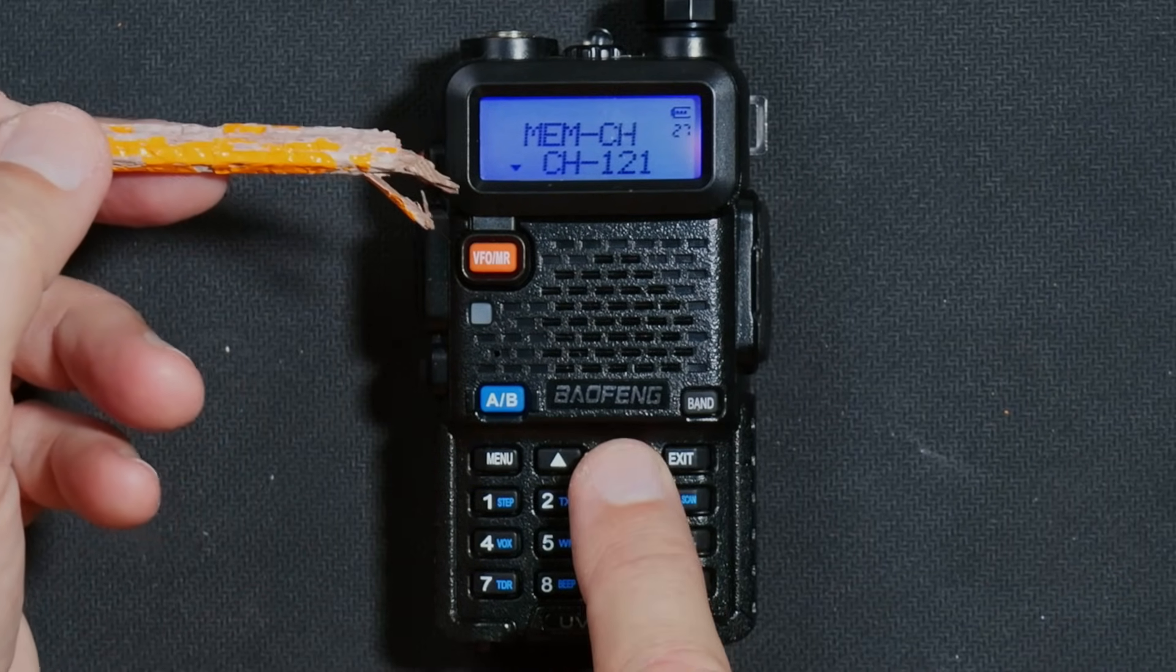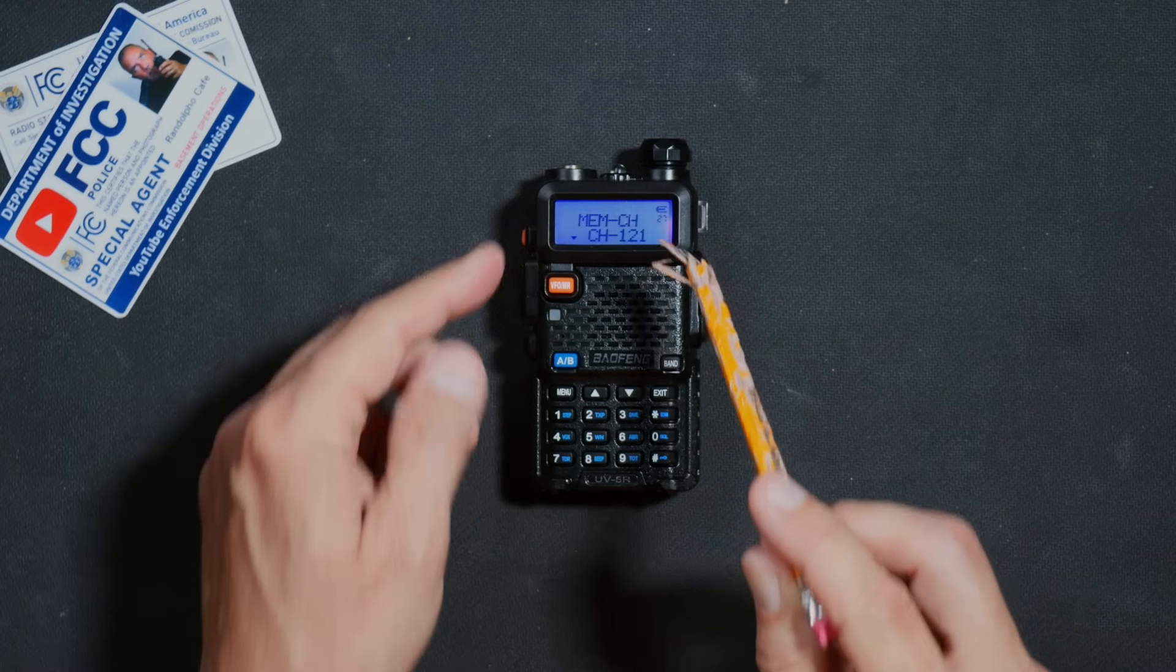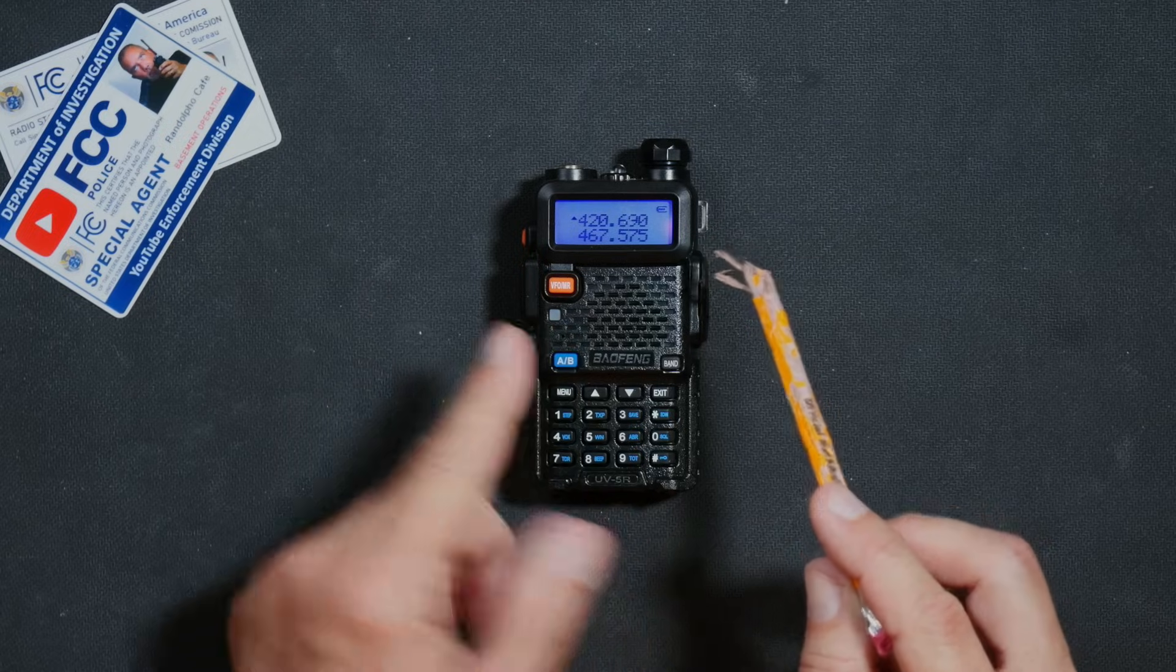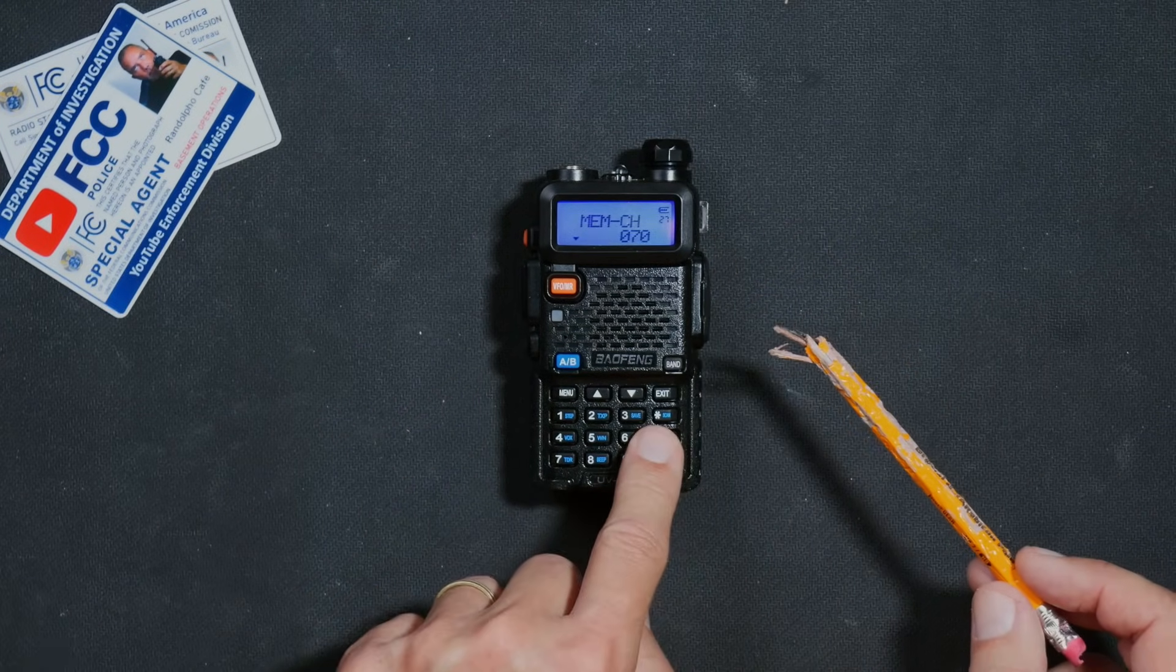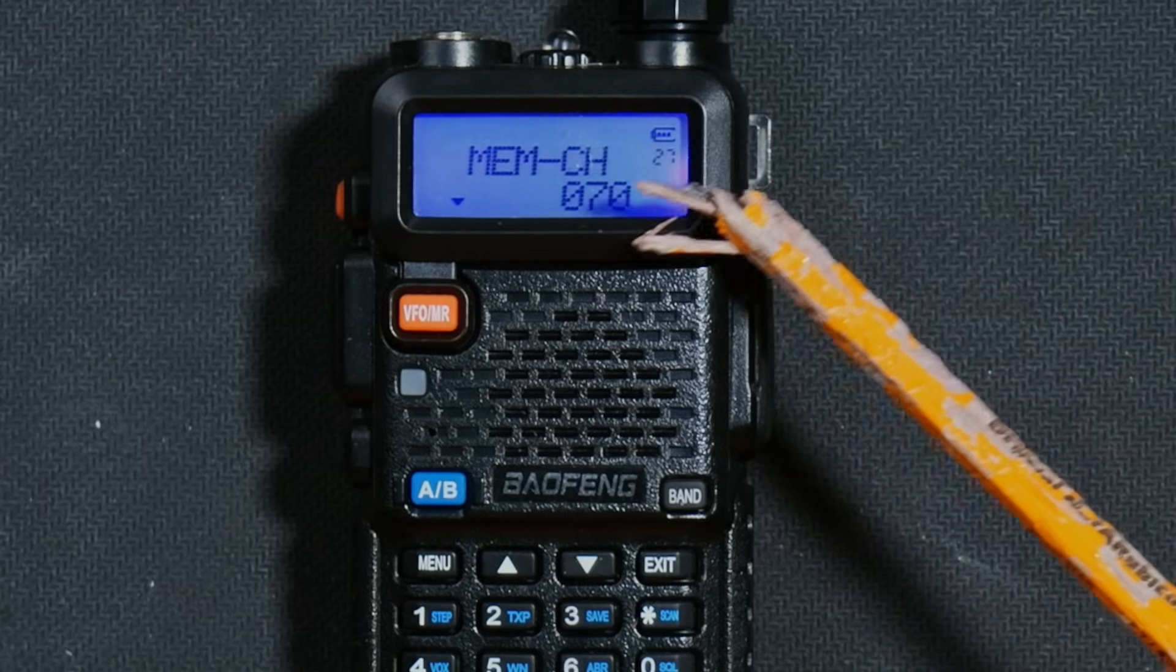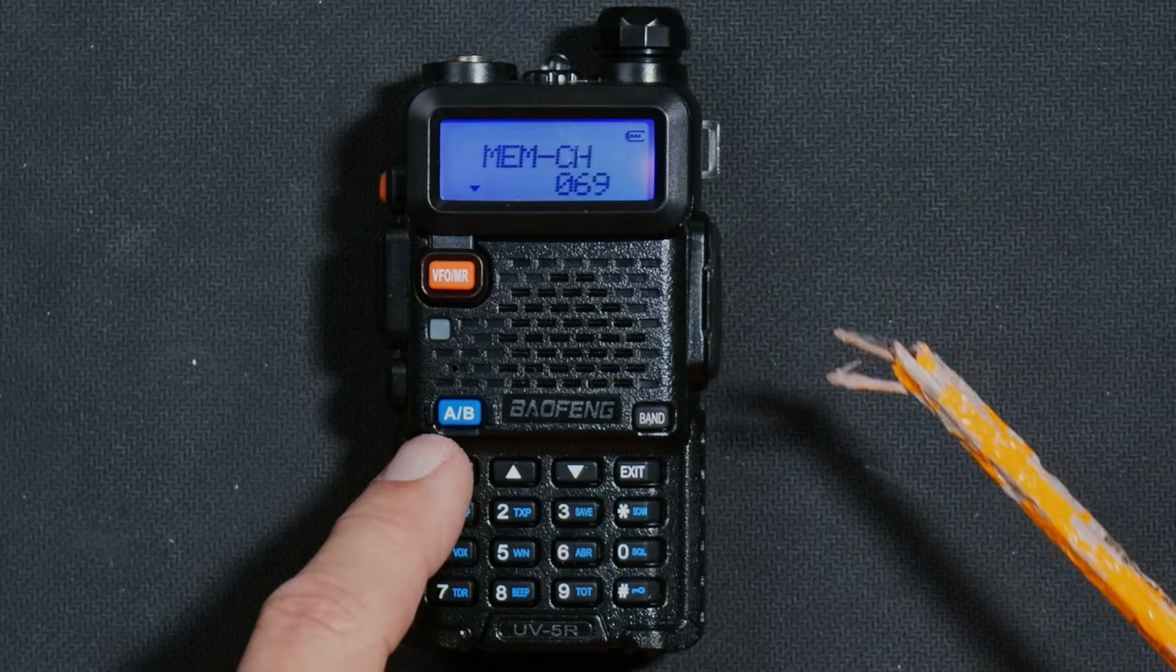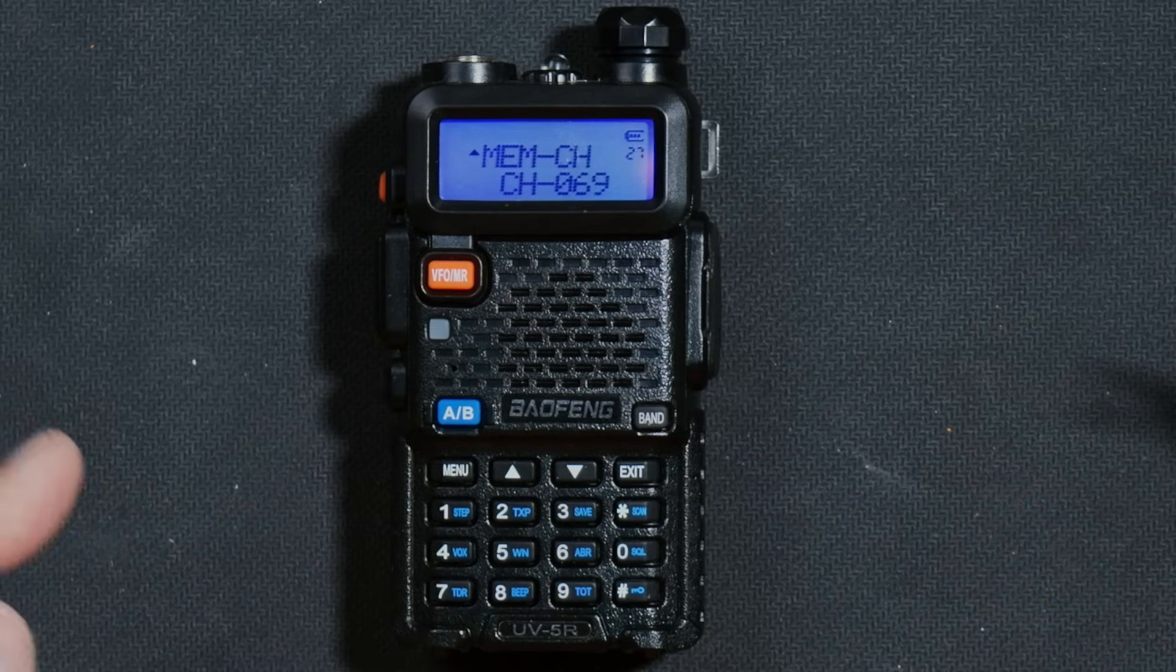If it shows CH and then the number, this means that that channel already has something stored in it, and you cannot use that channel for anything else until you first delete that channel. So just keep using the up or down arrow until you find an open channel, meaning that it shows just the number without the CH in front of it, and then crush the menu button again, and your frequency will now be stored on that channel number.